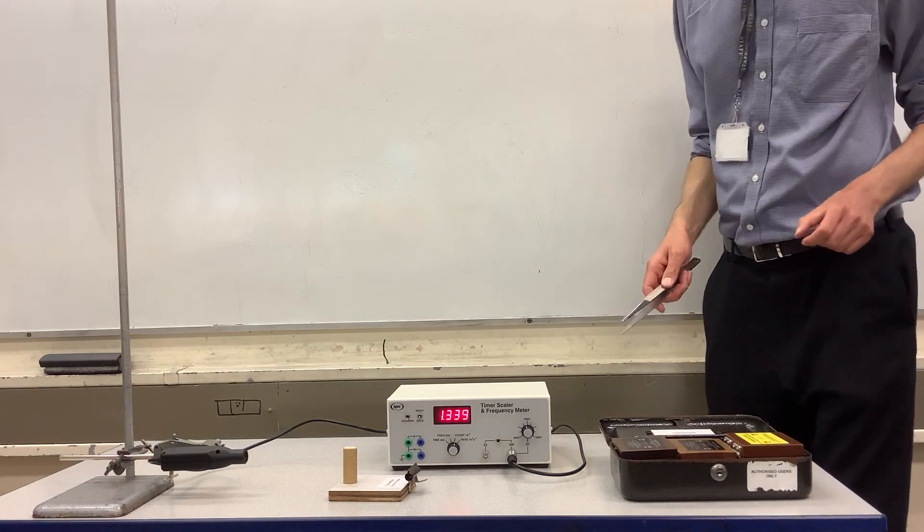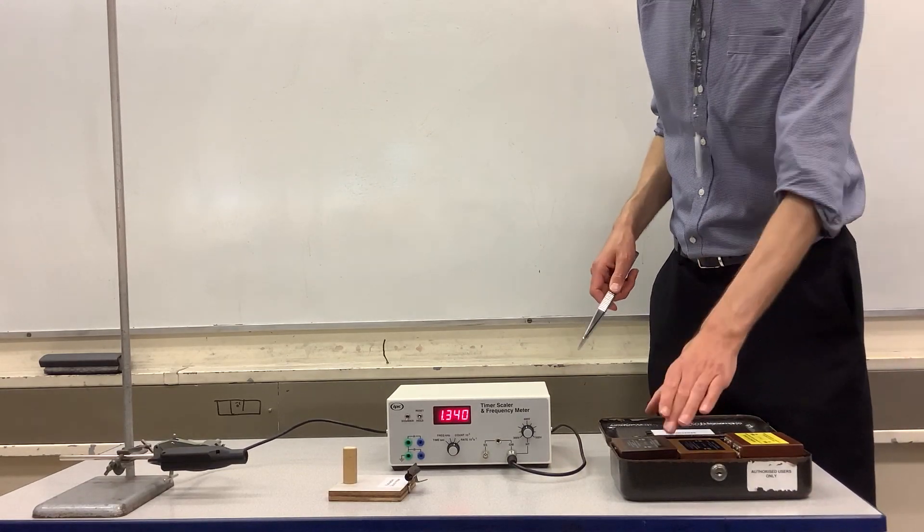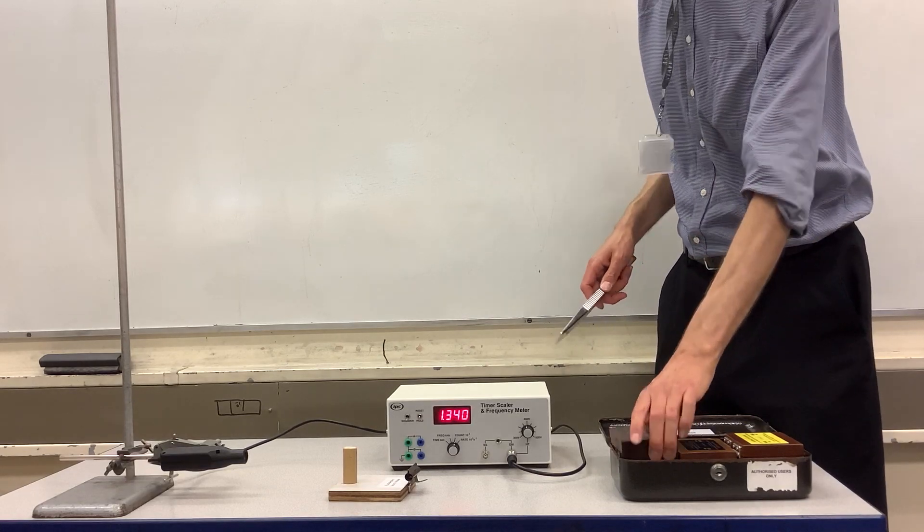We're now going to have a look at the properties of beta radiation, and for this we're going to use this strontium-90 source.